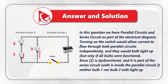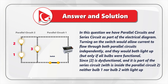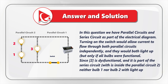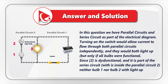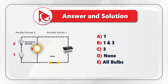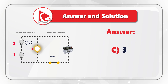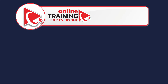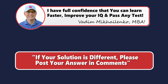In this question, we have parallel circuits and a series circuit as part of the electrical diagram. Turning on the switch would allow current to flow through both parallel circuits independently and they would both light up, but only if all bulbs were functional. Light bulb 2 is a dysfunctional light bulb, and since it is part of the series circuit inside parallel circuit 2, neither bulb 1 nor bulb 2 will light up. So the correct answer is Choice C: light bulb 3 will light up if we turn on the switch. If you didn't get the same conclusion, please post your answer and solution in comments.